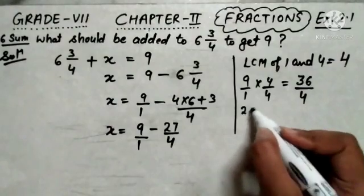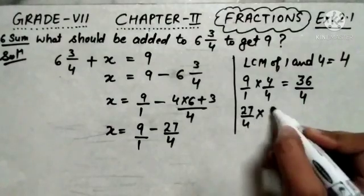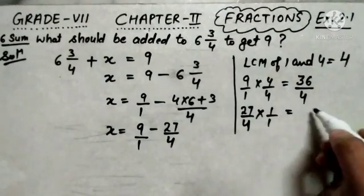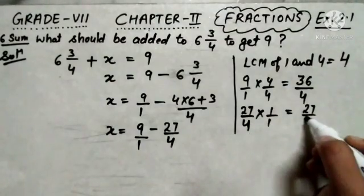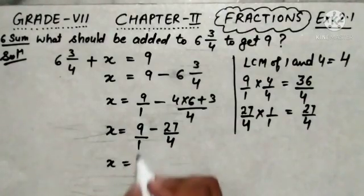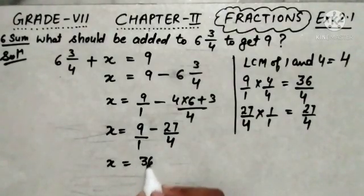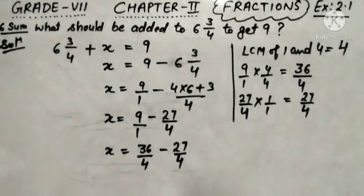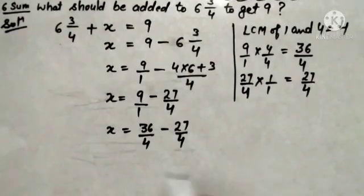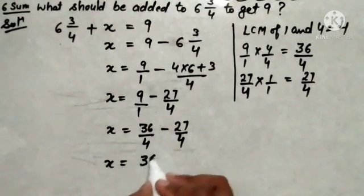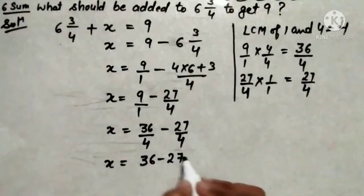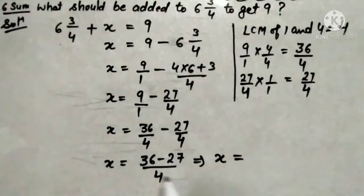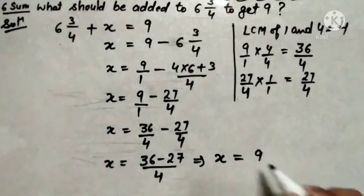The term 27 upon 4 can be written as multiplied by 1 upon 1, because it already has the denominator 4, so we multiply by 1 only — giving 27 upon 4. This means the expression becomes 36 upon 4 minus 27 upon 4. These two terms are like terms, so x equals 36 minus 27 upon 4.